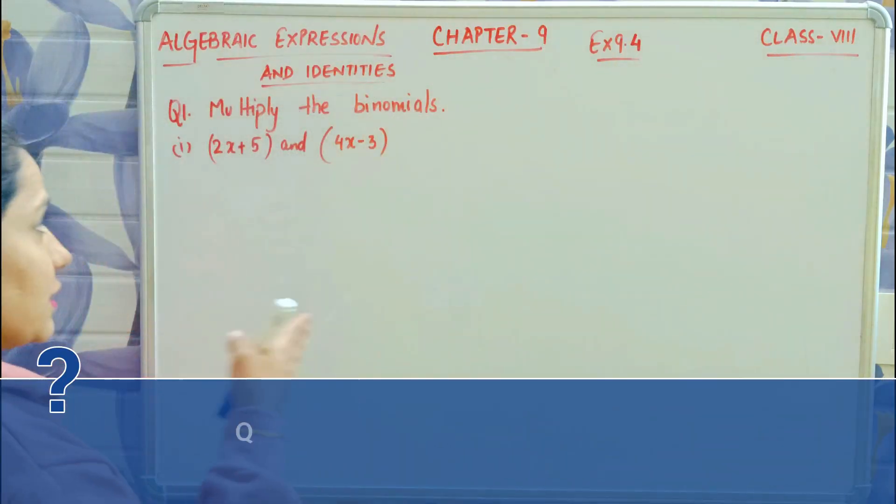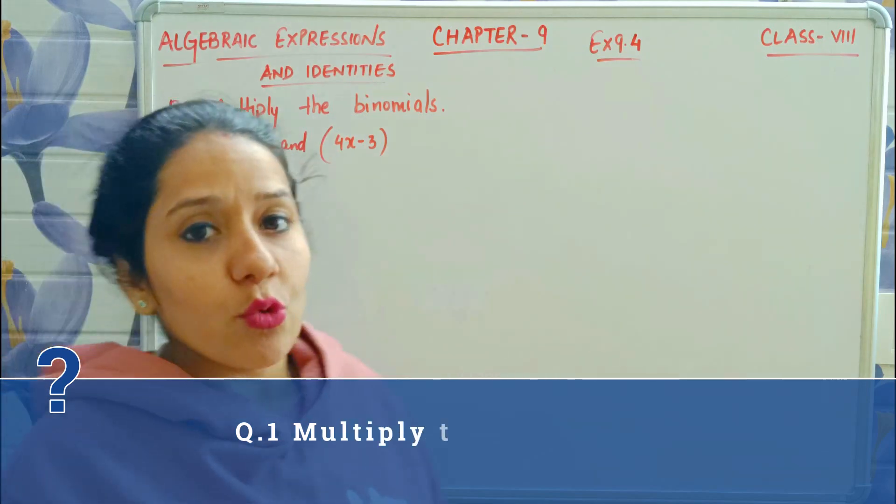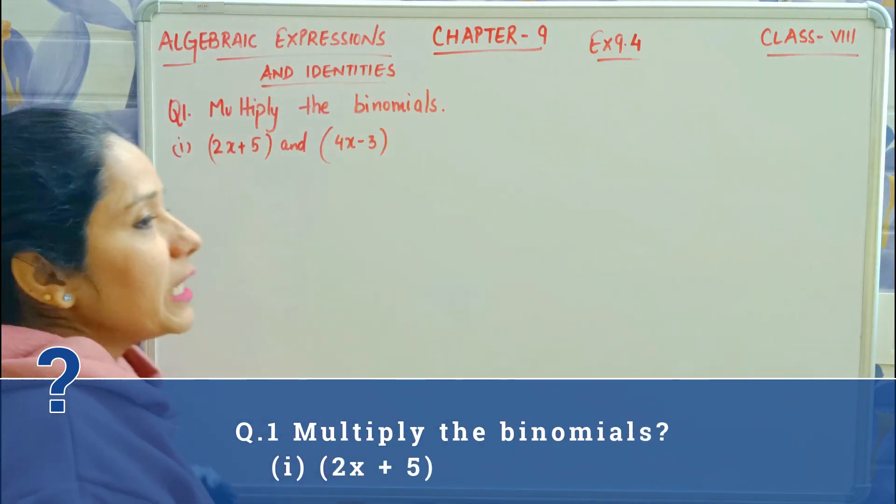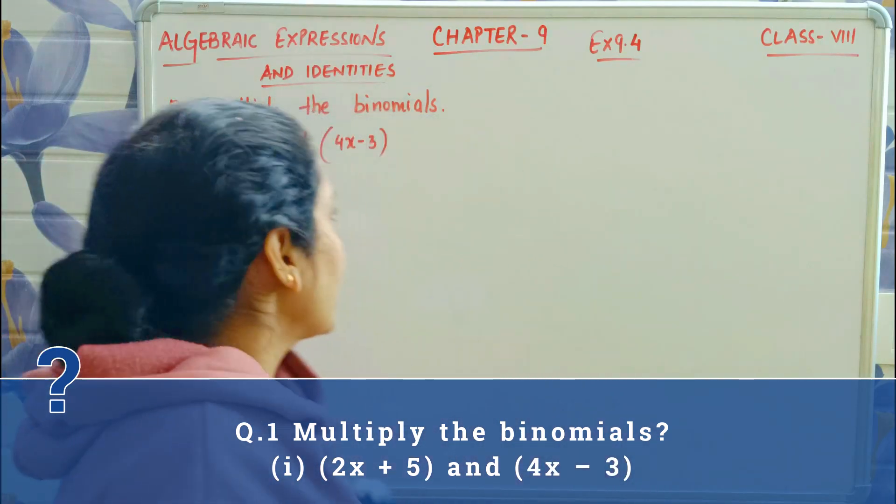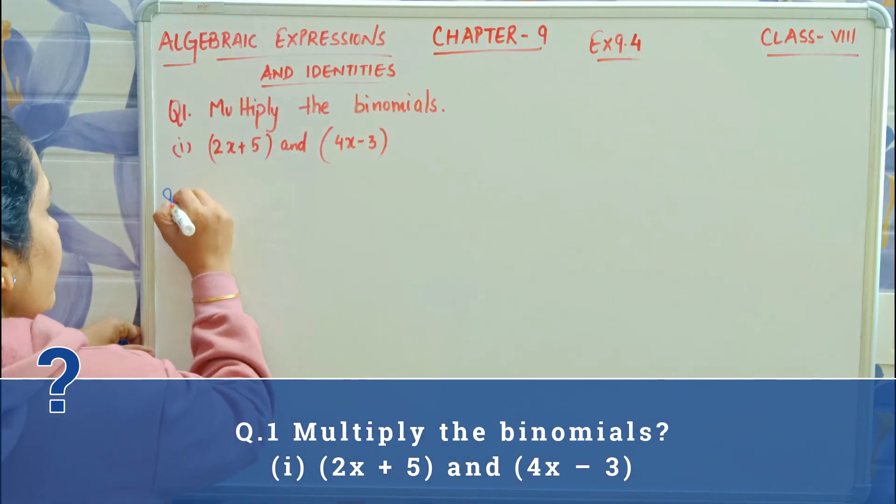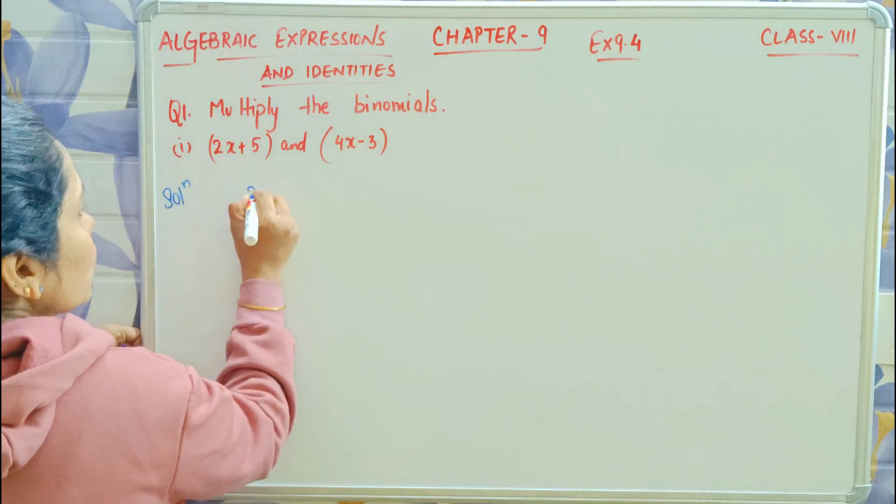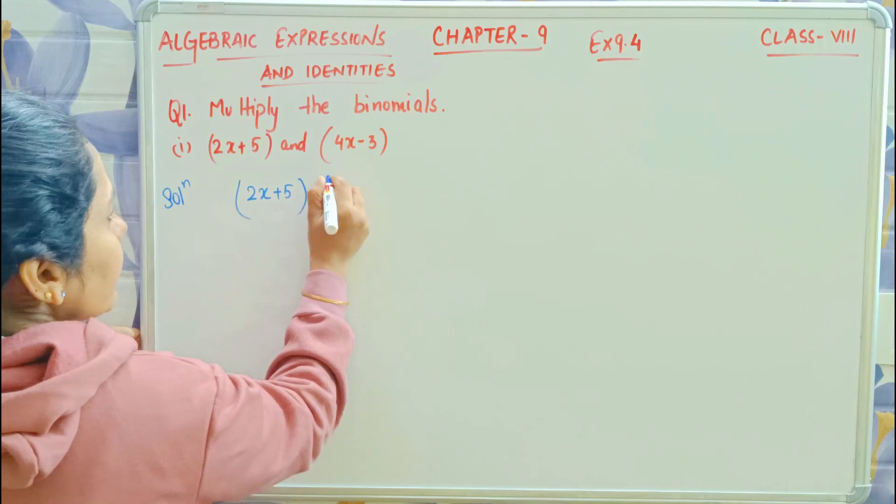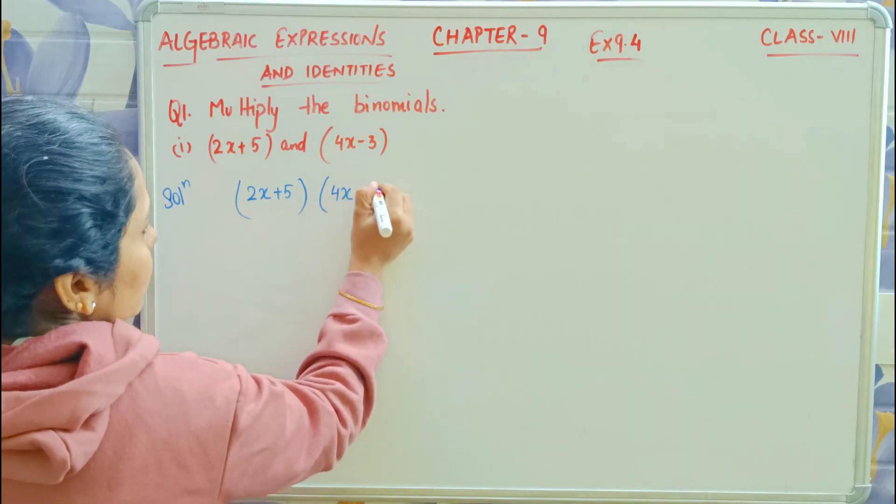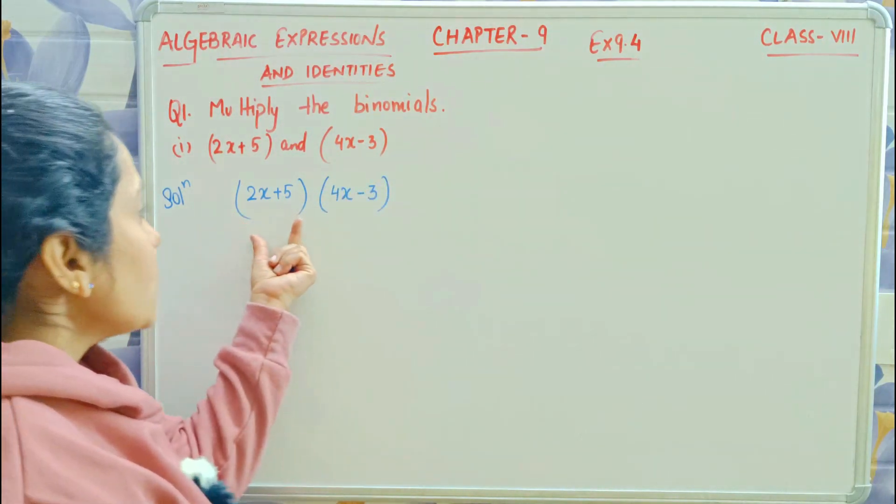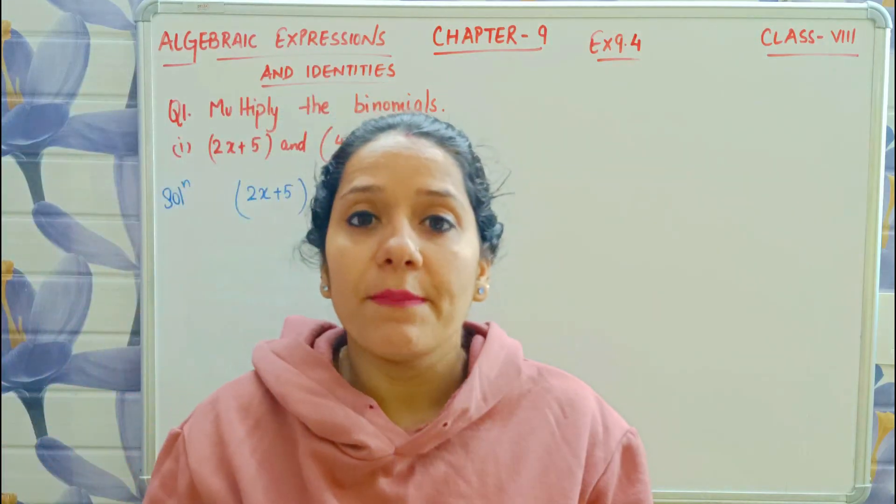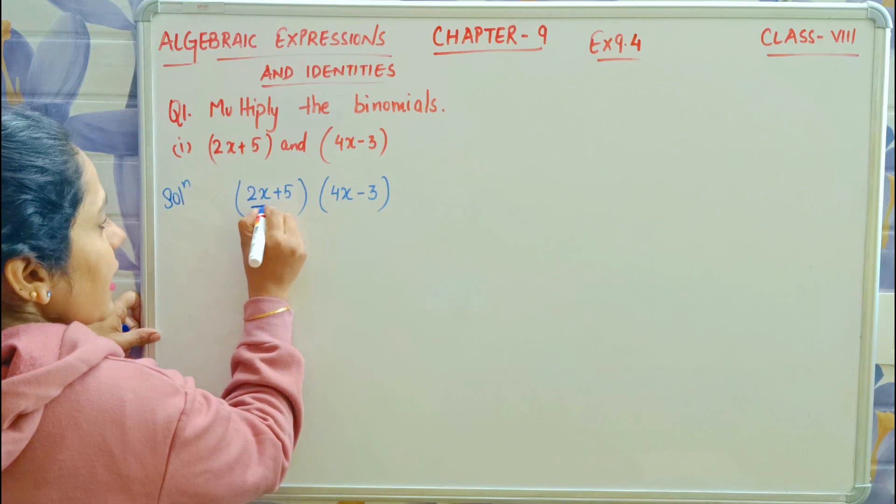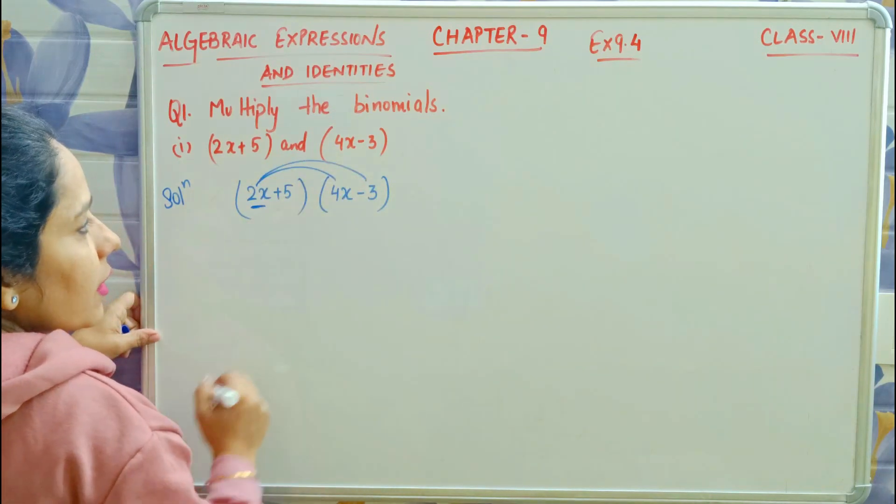Question number 1: Multiply the binomials. You are given two binomials, which means there are two terms. What do you have to do with them? Multiply. So let's see how to do it. 2x plus 5 and 4x minus 3. Now we will multiply these terms.